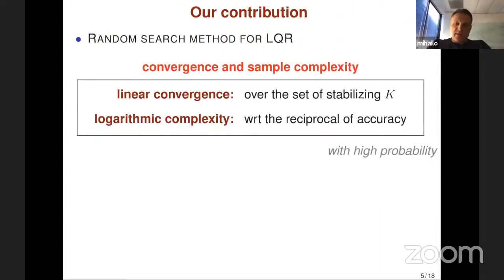The next slide summarizes what we've done in this area. We consider the random search method for model-free LQR, and we established linear convergence over the set of stabilizing feedback gains and logarithmic sample complexity with respect to the reciprocal of the desired accuracy.